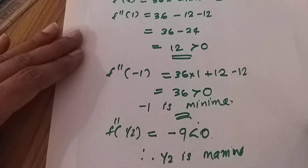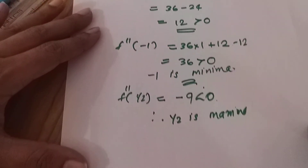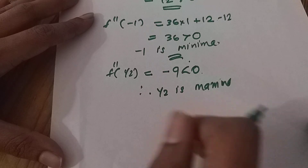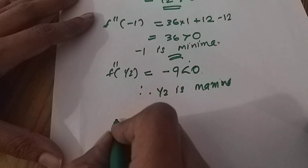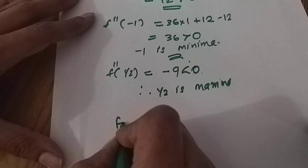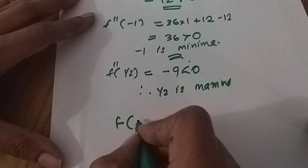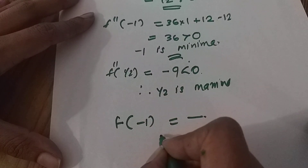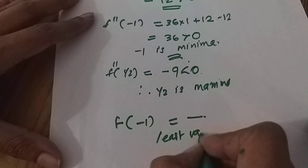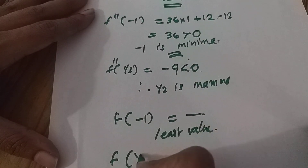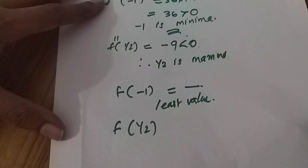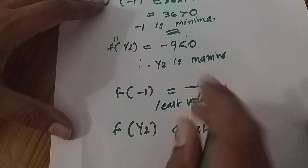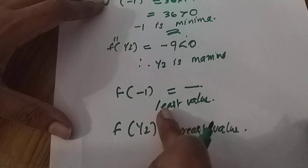Next, we will find the minimum and maximum values by evaluating the function. We add f(−1) to find the least value of the function, and evaluate f at other points to find the greatest value.